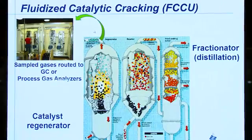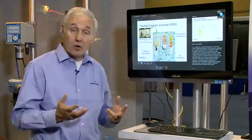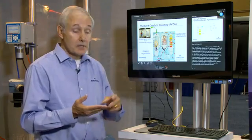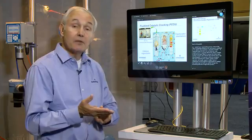In a partial burn regeneration process they don't burn all the coke off, they just volatilize some of it so some CO comes off, some CO2 comes off, and some oxygen comes off.